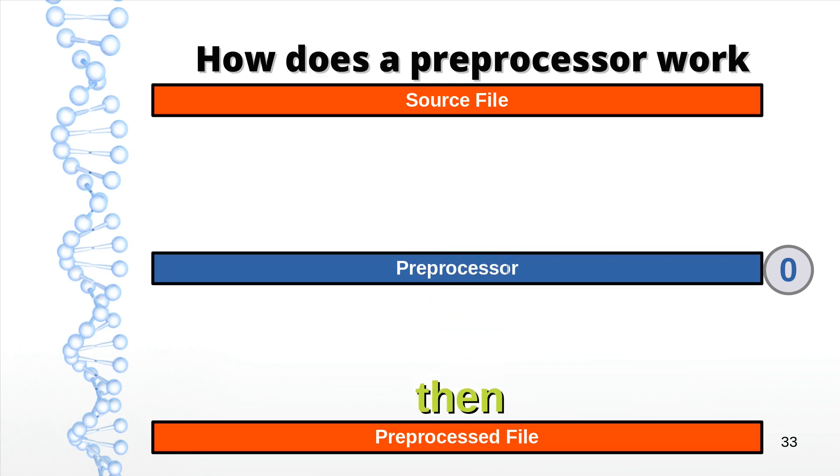That's why you never see the preprocessor. If it does its job well, it's virtually transparent.